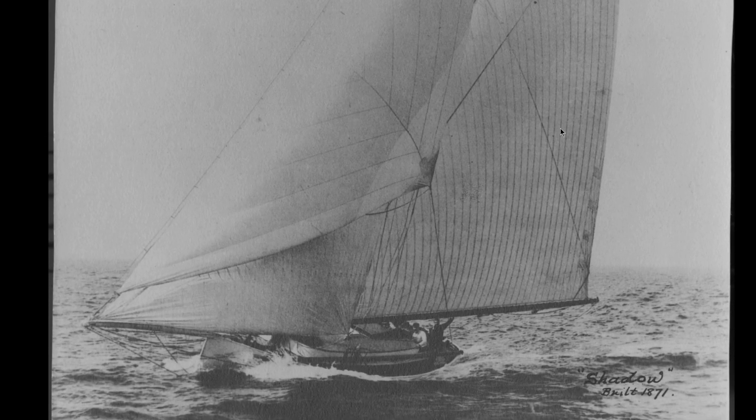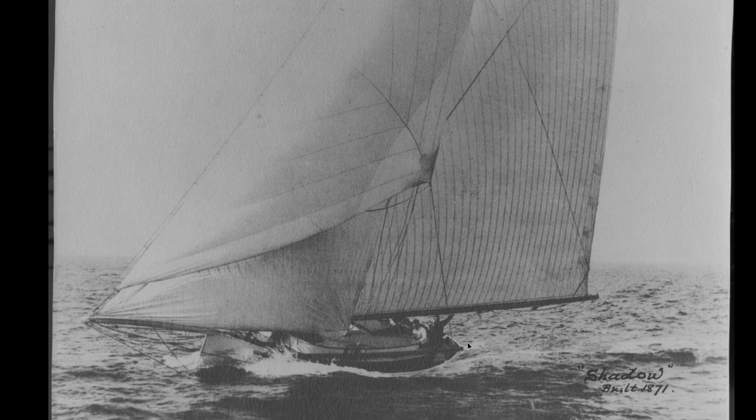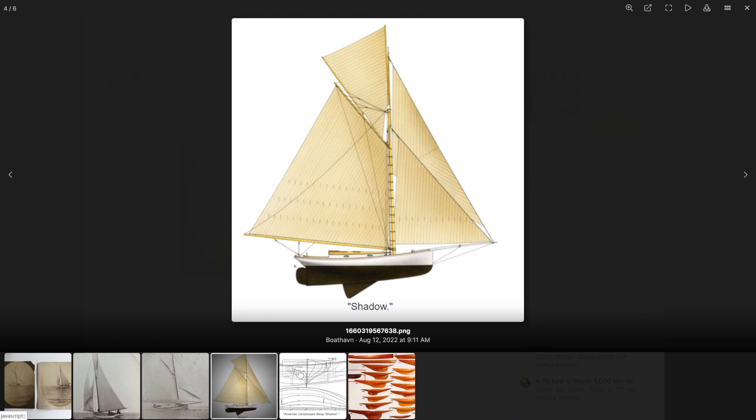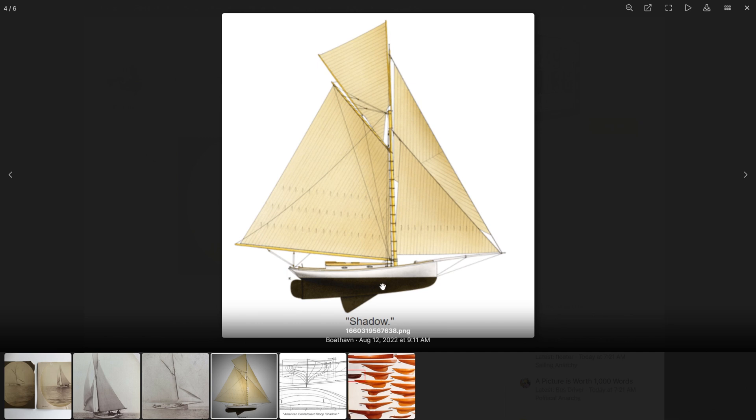So here is the boat right here, built in 1871. Here's a couple more pictures of it. So supposedly this was one of the fastest boats of its kind back in the day. And check this out, this is kind of neat. It has a centerboard that pivots down from its keel.